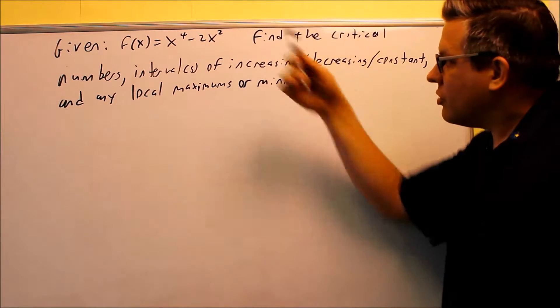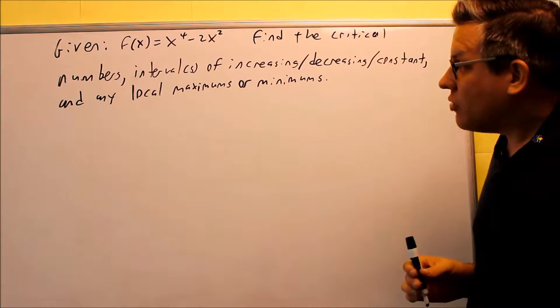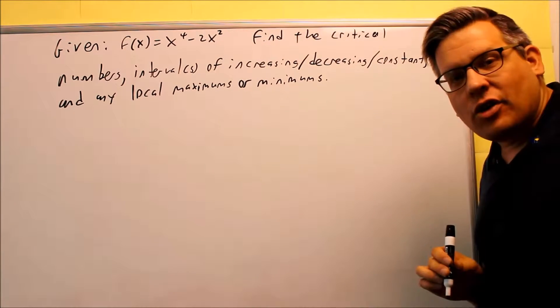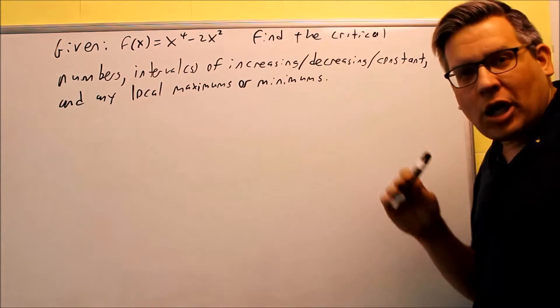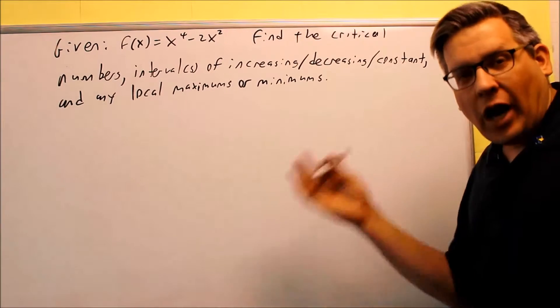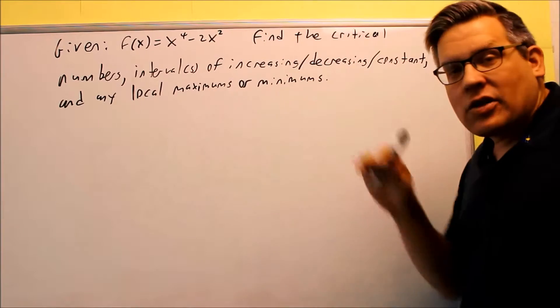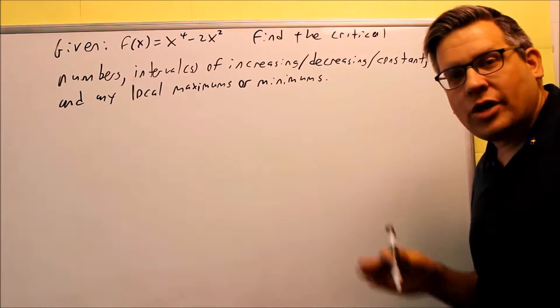Okay, this function probably looks familiar to you here, x to the fourth minus 2x squared, because that's exactly the same one that we used in the very first video. Now what was different about that problem was it gave you a graph, and you got all the same information, increase and decrease in constant, mins and maxes, you got all that from the graph itself.